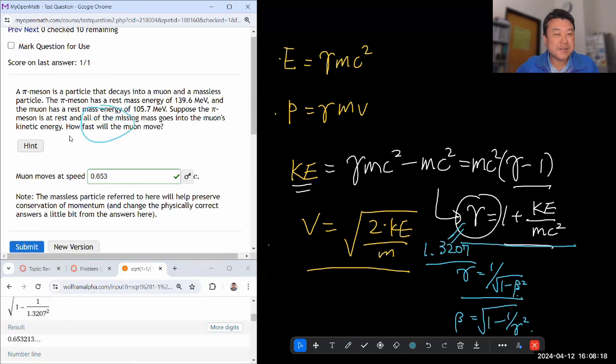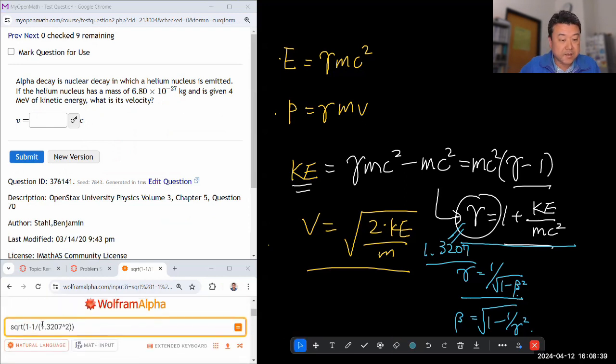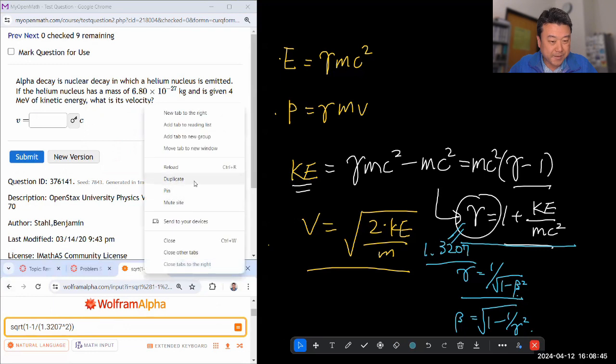Let's look at the next question and see if we can reuse some of the formulas. Alpha decay is a nuclear decay in which a helium nucleus is emitted. Helium nucleus with mass is given 4 MeV of kinetic energy. What is its velocity? Oh, I think I can use the exact same formula. So we are given the kinetic energy directly.